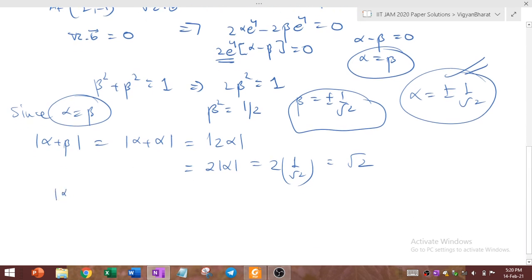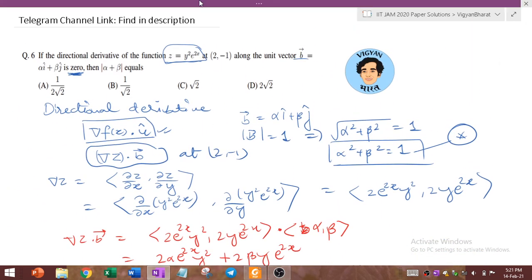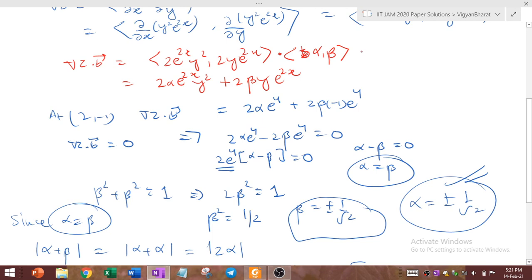So this mod alpha plus beta magnitude equals square root of 2. So let us quickly revise what we have done. Here first we use the definition of the directional derivative for the given function z which is the function of two variables x and y along the unit vector b at this point. Finally this dot product was given to be 0. So here we calculated this, equated to 0, obtained this result that alpha is same as beta.